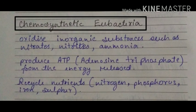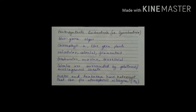Now let's move on to the chemosynthetic eubacteria. They can oxidize inorganic substances such as nitrates, ammonia, nitrites, etc. They produce ATP — adenosine triphosphate — from the energy released by oxidizing those inorganic substances. They are important in recycling nutrients such as nitrogen, phosphorus, iron and sulfur, meaning they are part of the biogeochemical cycles which include these elements. These bacteria help in the transition of inorganic to organic substances.